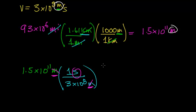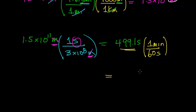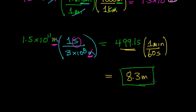When I do this division out, you get 499.1 seconds. The last step is to convert seconds to minutes to make more sense of it. There are 60 seconds in one minute, and when you do this division out, you get 8.3 minutes. So the time it takes for a ray of light to travel from the surface of the sun and reach us here on Earth is about 8.3 minutes.